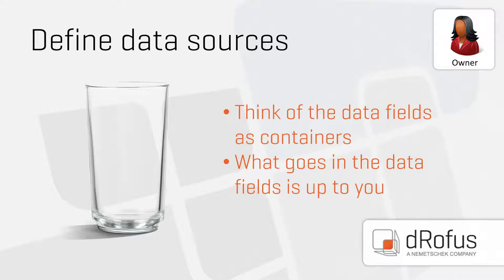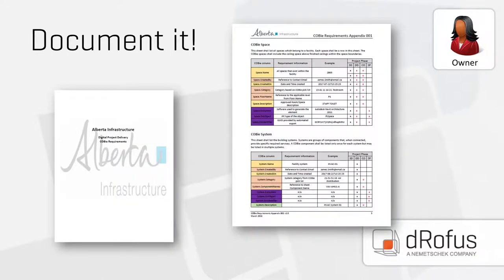Make sure everything is clearly documented so teams can plan accordingly. A great example is Alberta Infrastructure's Digital Project Delivery COBE requirements. Alberta Infrastructure is responsible for planning, building, and managing much of the government-owned infrastructure in the province, and they're a really good resource if you want to see how an owner started with defining their asset information requirements first and then built the COBE data structure around them. We're currently helping several teams use Dorofus to meet Alberta Infrastructure's COBE deliverables, and it's incredibly valuable for a team to know what the owner wants from the beginning.